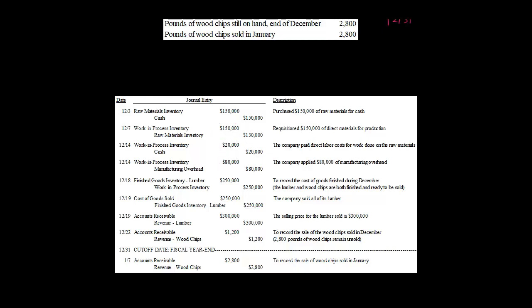So when we actually finish producing the lumber, we're going to credit work in process inventory for $250,000 and debit finished goods inventory related to the lumber for $250,000. Notice we do not set up any kind of an inventory account here for the wood chips. That's different than the production method — in the production method, lumber would be debited for $246,000 and we'd have a byproduct inventory account debited for $4,000. We're not doing that here. Under the sales method, we just record the inventory for the lumber.